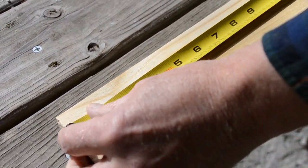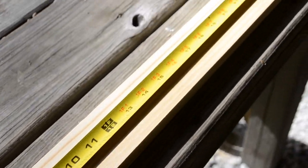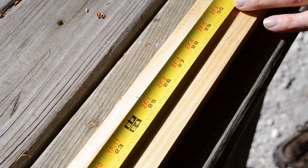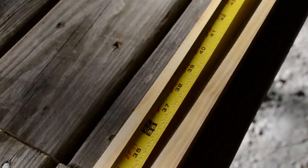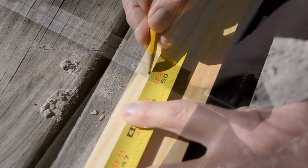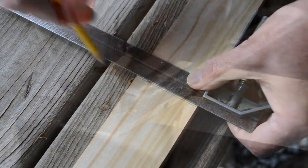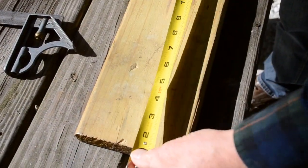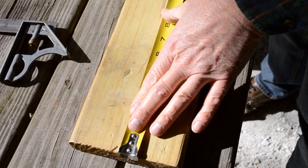To get started you'll need a piece of 1 by 3 furring strip which is actually a piece of wood that's 3 quarters of an inch thick by 2 and a half inches wide. You will need two 25 inch lengths. For the base I used a 10 inch long piece of 2 by 6.